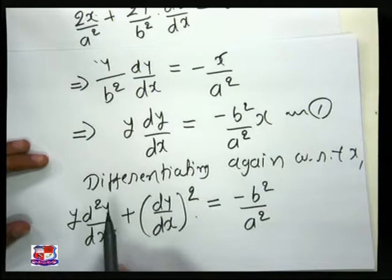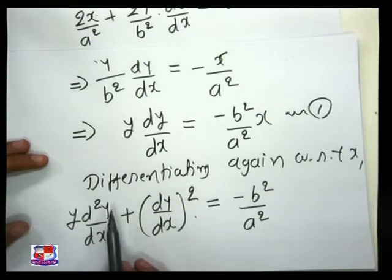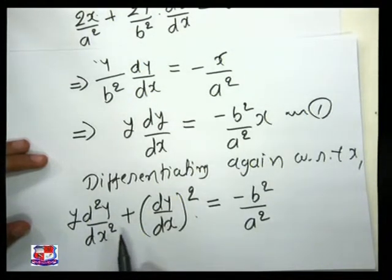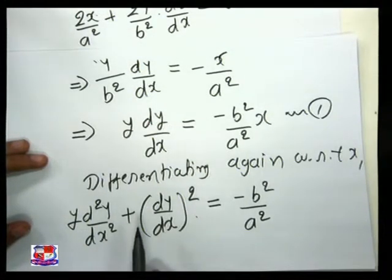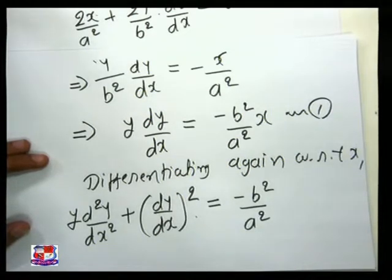After all, we get y·(d²y/dx²) plus (dy/dx)² is equal to minus b²/a².